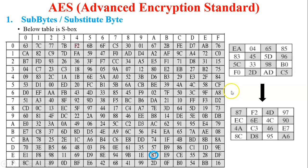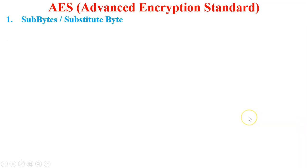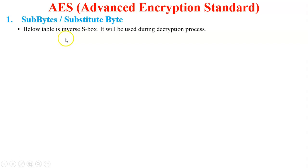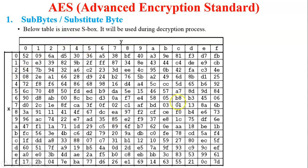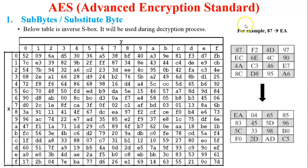Another example: 04 — 0 is the row and 4 is the column, and they intersect at F2, so 04 is replaced by F2. The table below is the inverse S-box, used during the decryption process. It works the same way: for example, 87 — 8 is the row and 7 is the column — intersects at EA, so 87 is substituted back with EA.